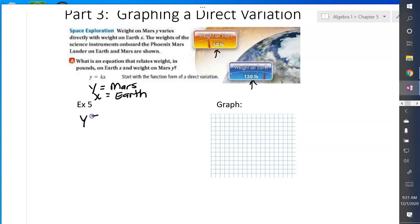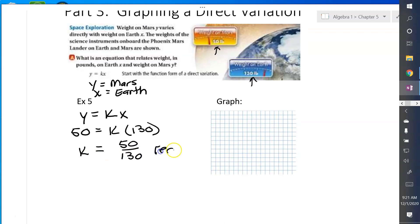So with that information, let's find the equation for the direct variation. I know that y equals kx. Y is the weight on Mars. So 50 equals k times 130. Divide both sides by 130. I'm going to get k equals 50 over 130. Please reduce this fraction. And when you reduce it, you'll get 5 over 13. So our equation is y equals 5 over 13x.